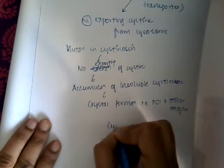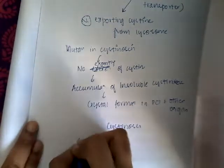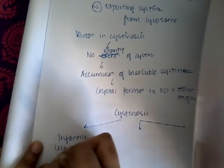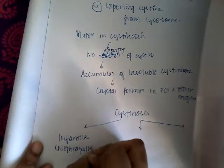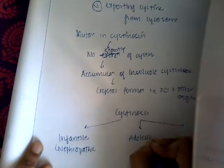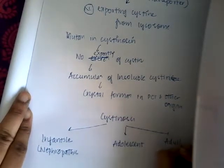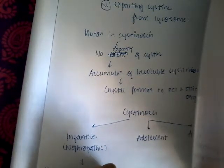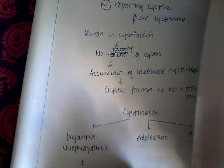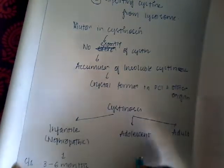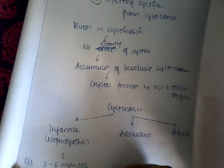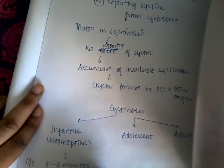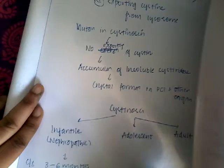Cystinosis can occur in three forms: infantile form, which is called nephropathic; adolescent or intermediate form; and adult form. In the infantile form, end-stage renal disease is reached by 10 years, and in the intermediate form it is reached by 15 years.